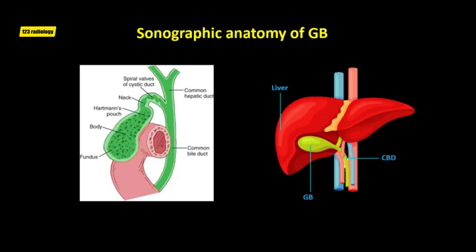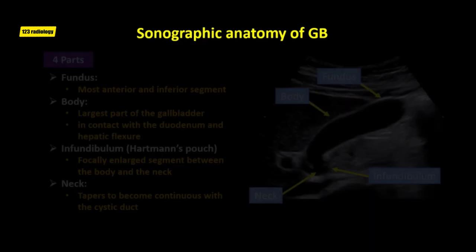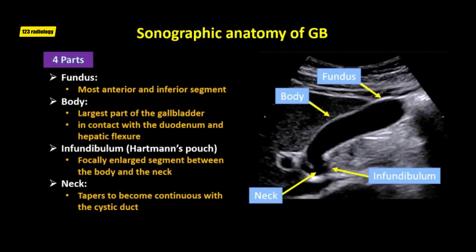The gallbladder is divided into four parts: fundus, body, infundibulum, and neck. The fundus is the rounded distal tip, which may project below the anterior inferior liver edge, and is the most anterior and inferior segment. The body represents the largest central portion and may be in contact with the duodenum and hepatic flexure of the colon. The infundibulum, or Hartmann's pouch, is the focally enlarged segment between the body and the neck.